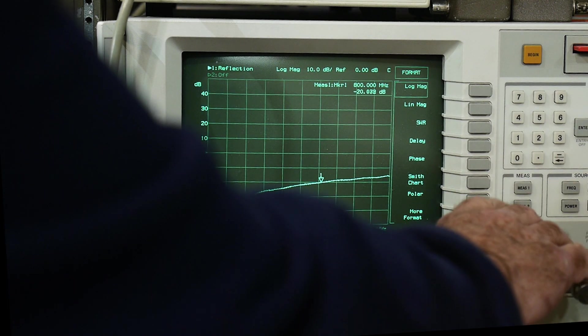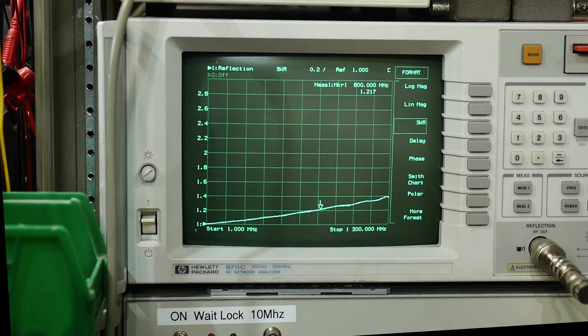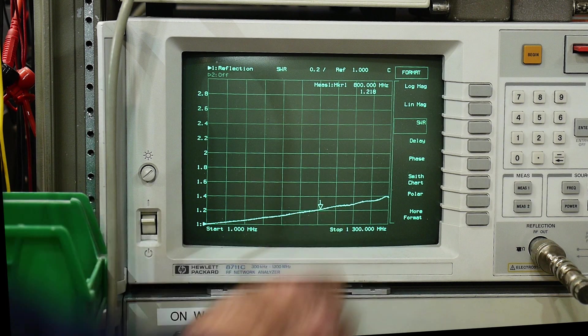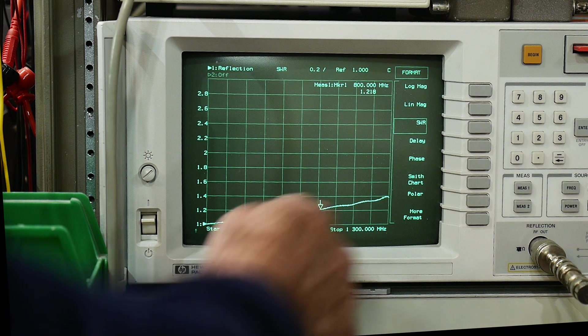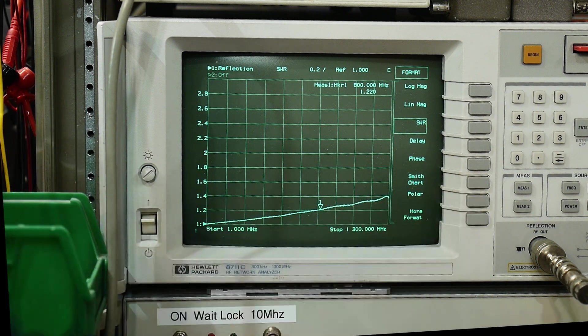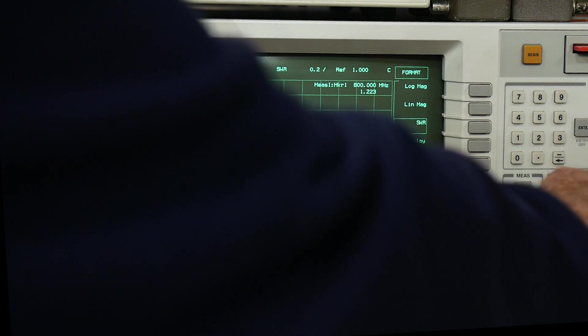We can go to SWR if you want, measuring about 1.2 SWR at 800 megahertz and it's doing pretty good up to 1.3 gigahertz, SWR 1.4 out there.